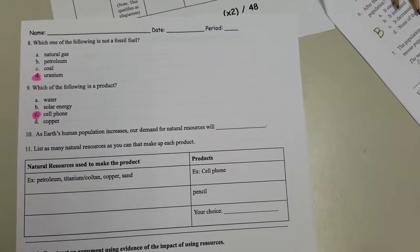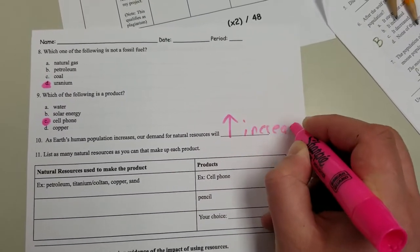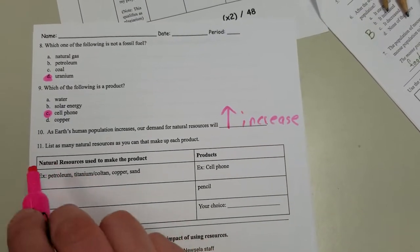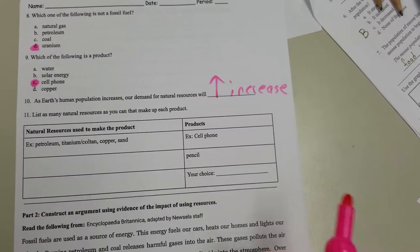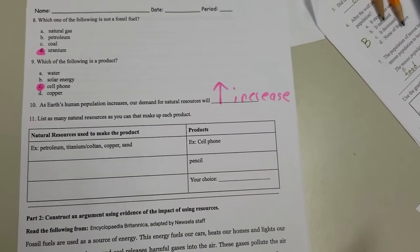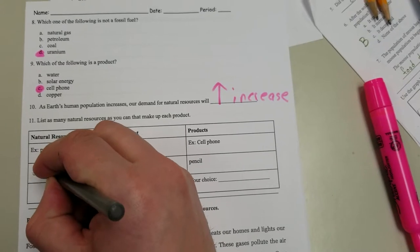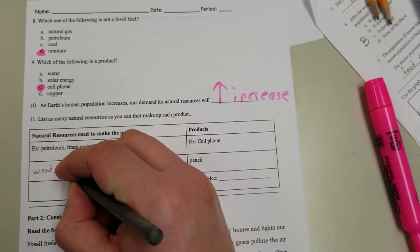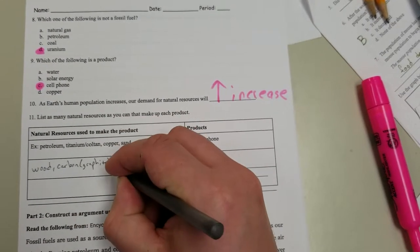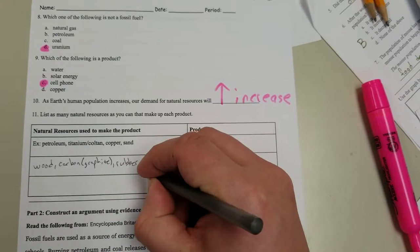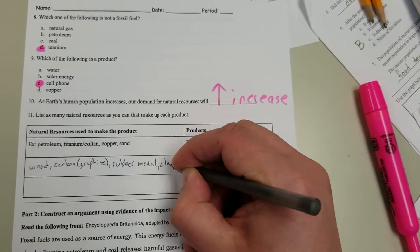As human population increases, our demand for natural resources will increase. List as many natural resources as you can think of that make up each product. Example for the cell phone: pencil, we did in class. We did our infographic on that. So pencils have wood, carbon, that's graphite, rubber, metal, clay, paint.